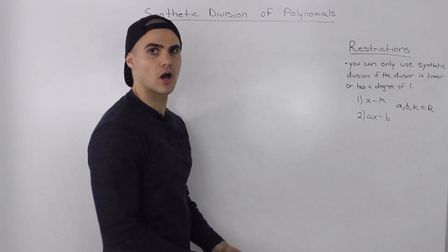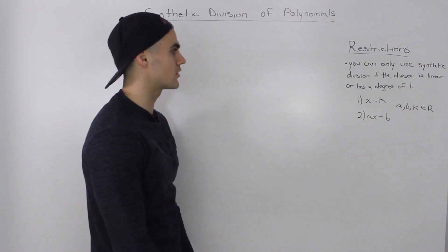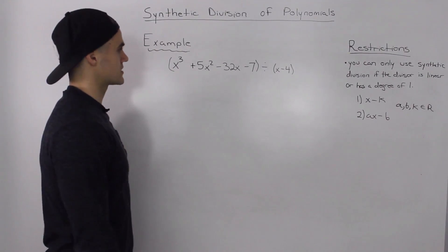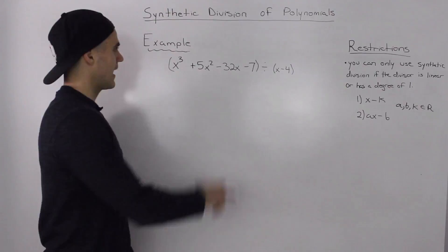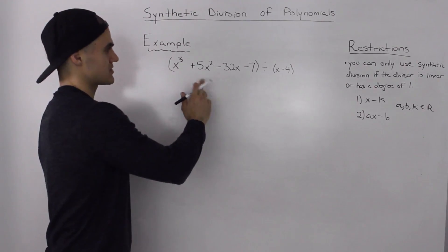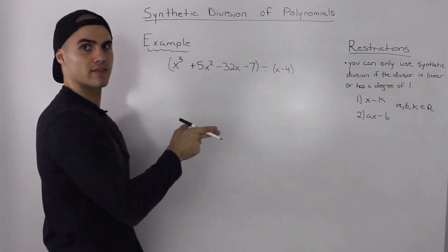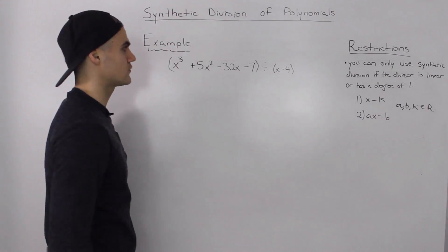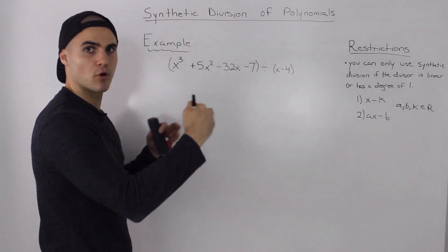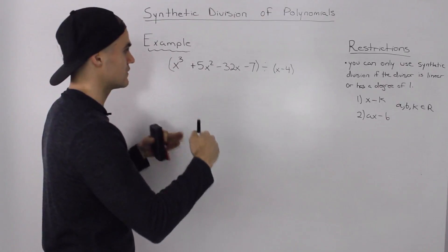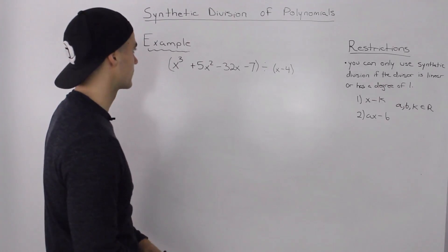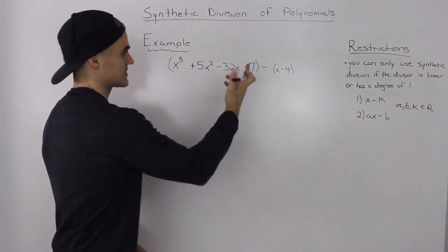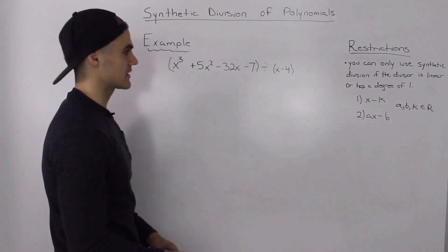In future videos, we'll go over the AX minus B case; however, it's a little bit more complex and a lot more steps are required. So let's do an example here to show you how synthetic division works. This particular example is actually the same one that we used in the long division of polynomials overview, just so you can compare both methods. So we've got X cubed plus 5X squared minus 32X minus 7 divided by X minus 4.